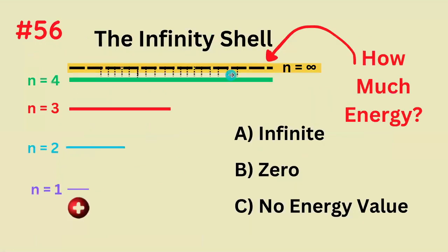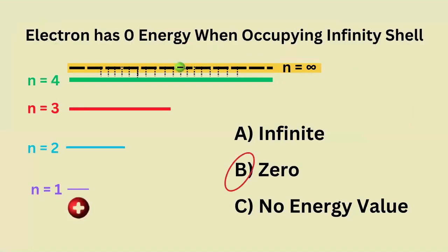The infinity shell has how much energy? Infinite, zero, or no energy value associated with it? The correct answer is zero. An electron has no energy when occupying an infinity shell.